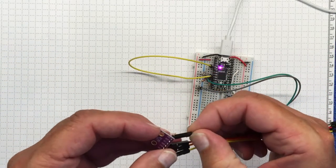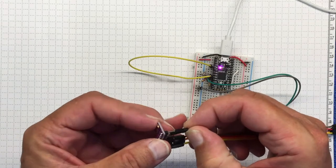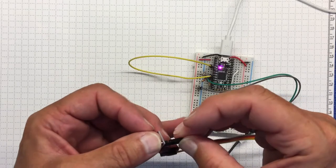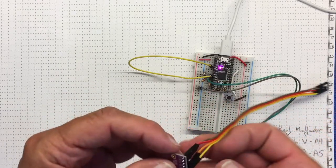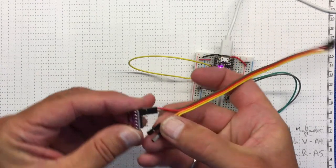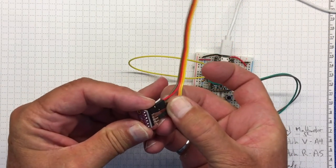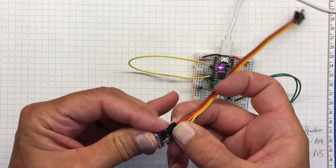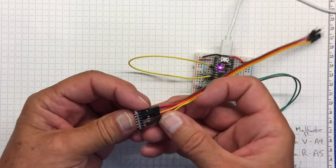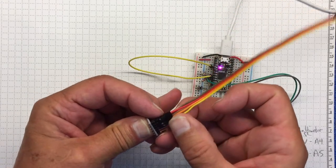So brown to ground, red to power. The colors don't matter, except that they help me figure out what I'm doing. Orange is going to SCL, and yellow is going to SDA, and the rest we're going to leave unconnected.